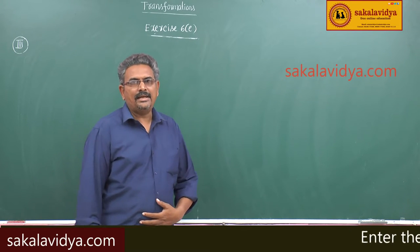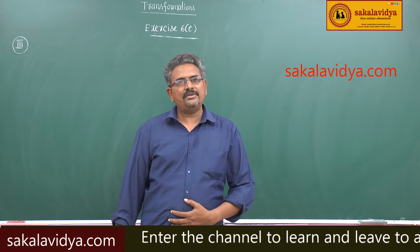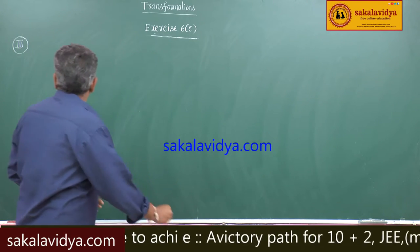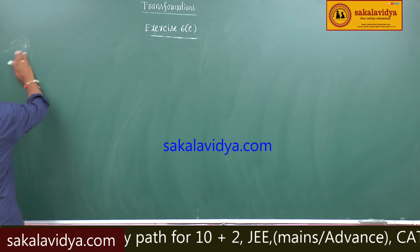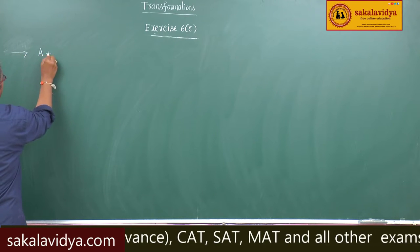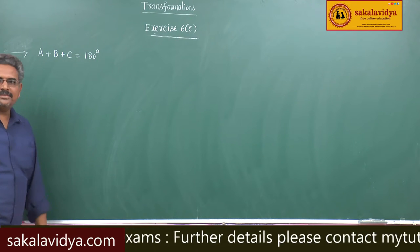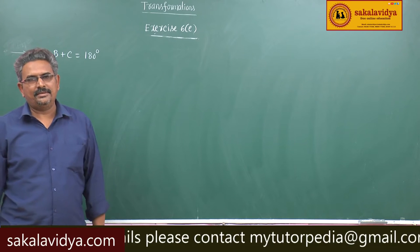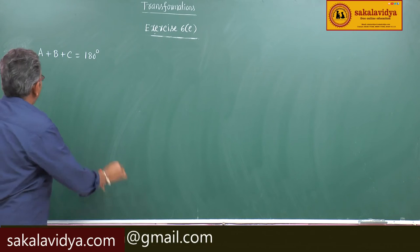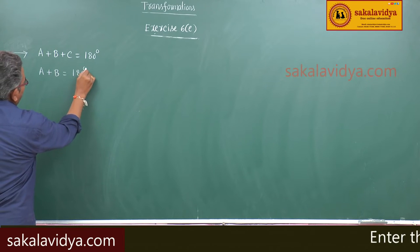Now we discuss identities — specifically, conditional identities. For example, if a plus b plus c is equal to 180 degrees, then a plus b is equal to 180 degrees minus c.